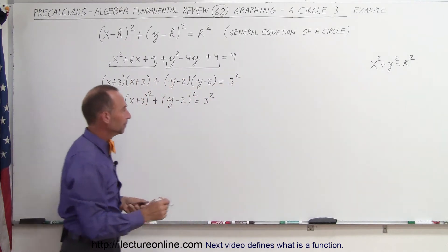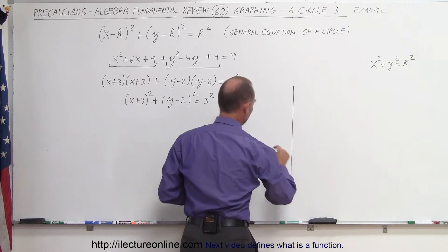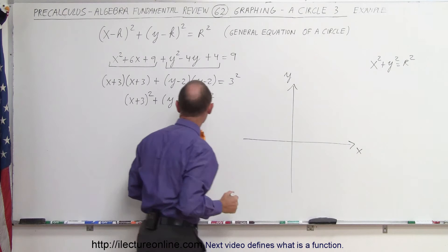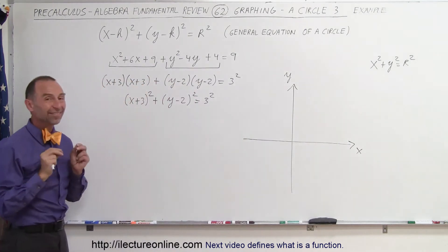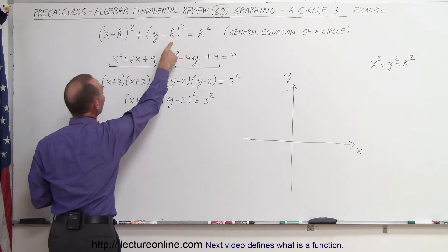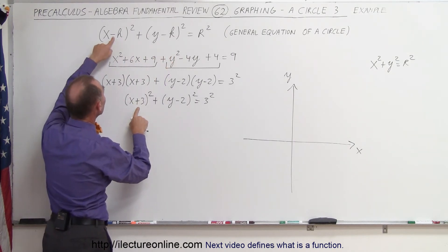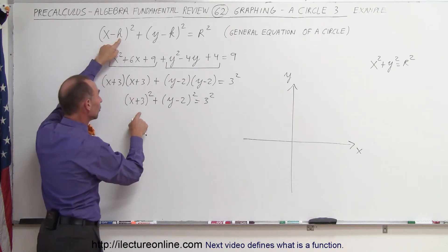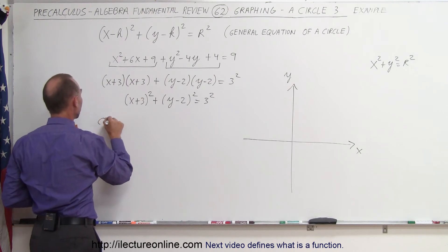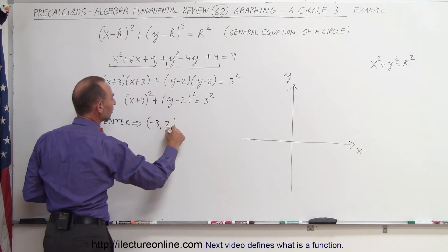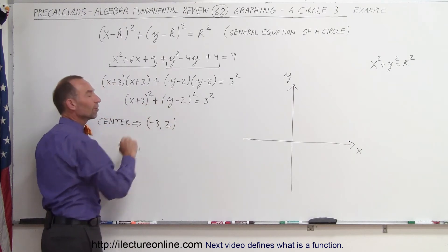Let's go ahead and graph this now. There's our xy-axis. First of all, we want to find the center. The center is located at the (h, k) value, but notice that you need a negative h to get a positive sign, and a positive sign there gives you a negative h. So the center would be located at negative 3 and positive 2 — it's always the reverse of the signs.